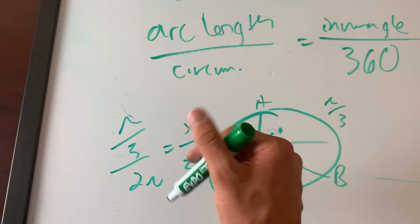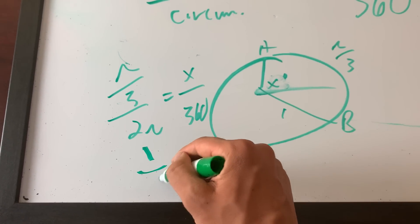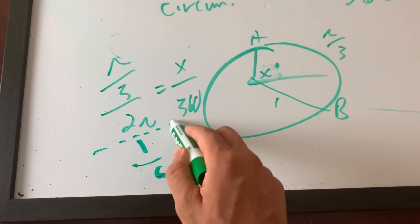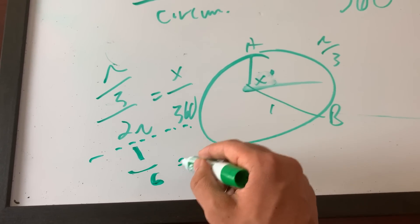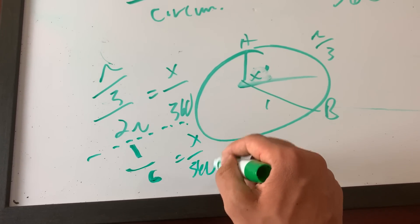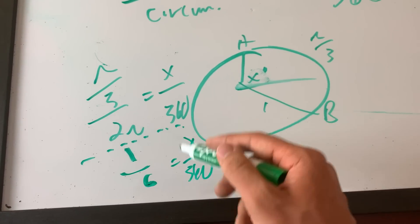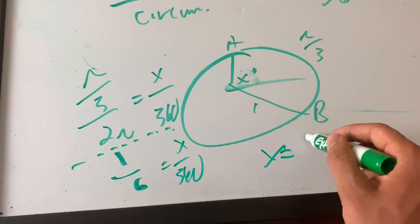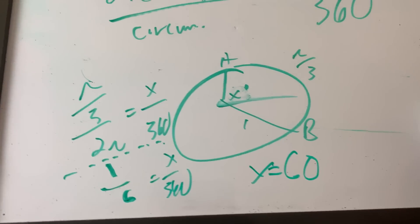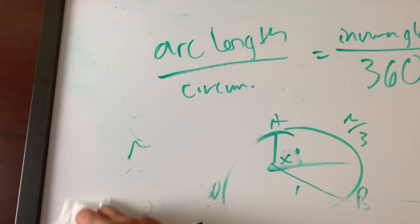Simplify the left side so you get one over six equals x over 360. Six times 60 equals 360, one times 60 equals x, equals 60, so x equals 60. Bang, remember that. That's four.